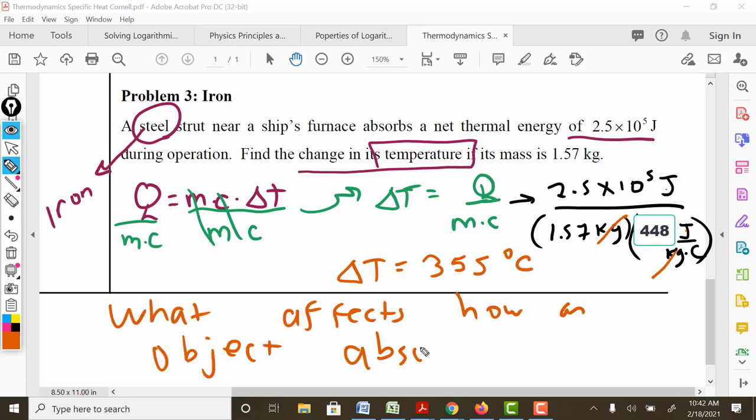For your summary, and don't be cheap, take some time. You're going to want to talk about that q equals m times c times delta t and explain how each part is going to affect it. That's all there is to it.